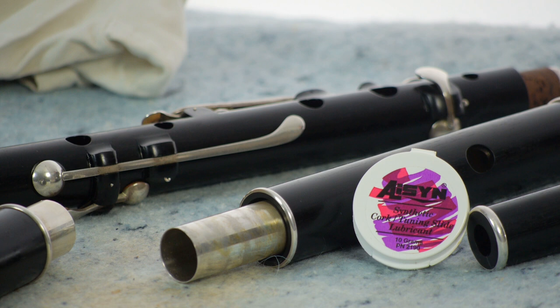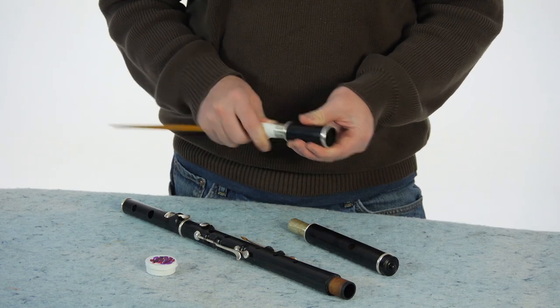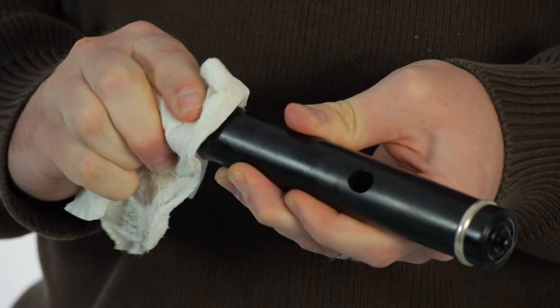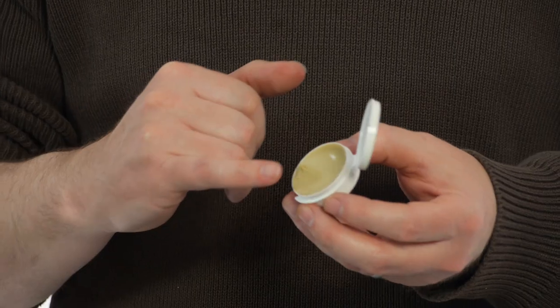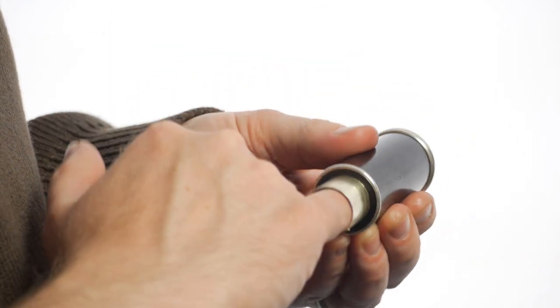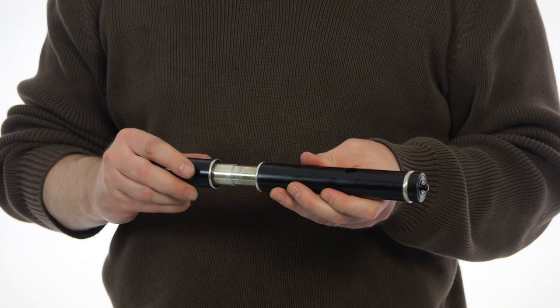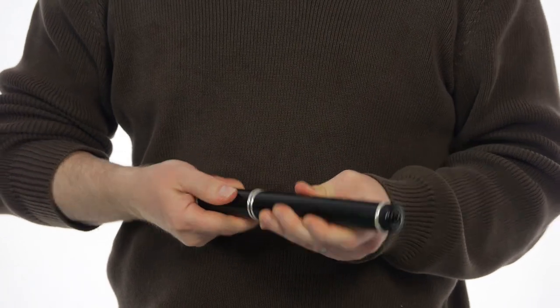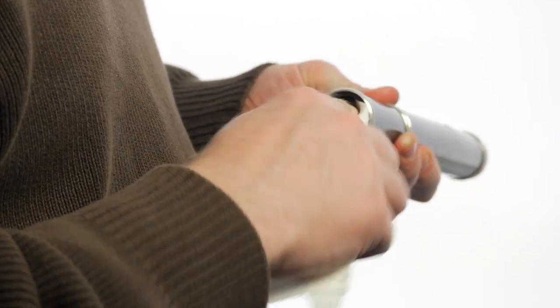If your slide needs grease, first clean both the inside of the barrel end and the outside of the head joint end with a clean paper towel. Using a small amount of slide grease, coat the inside of the barrel end evenly. This method allows for any excess grease to be pushed out into the inside of the barrel upon assembly and can be easily wiped away.